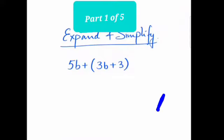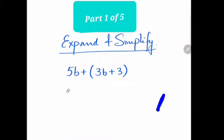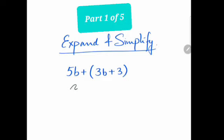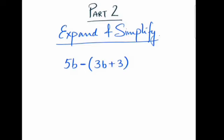Expand and simplify. So here the question is 5b plus bracket 3b plus 3. We are multiplying the bracket with plus, so it's 5b plus 3b plus 3. That will become 8b plus 3.